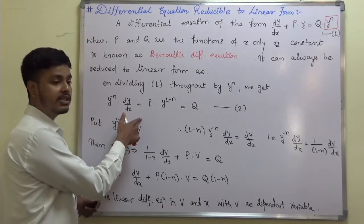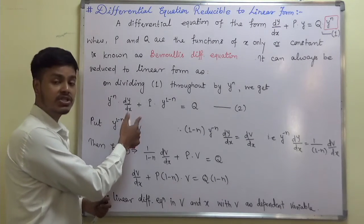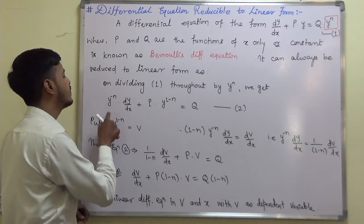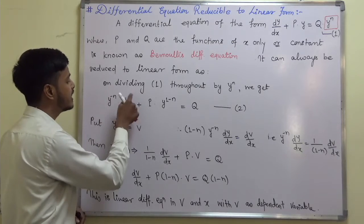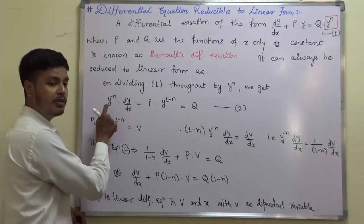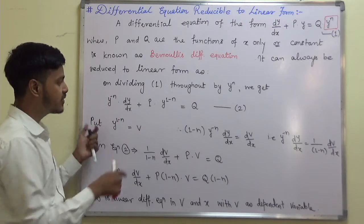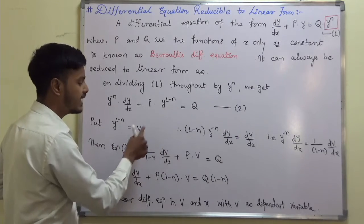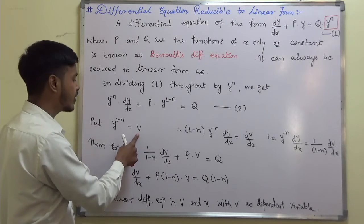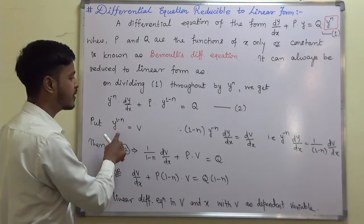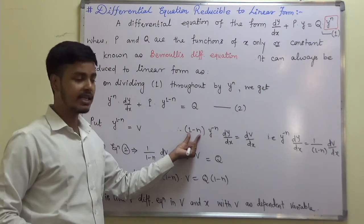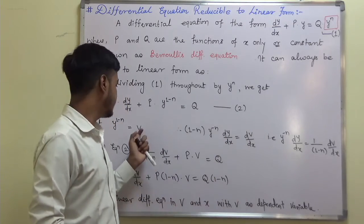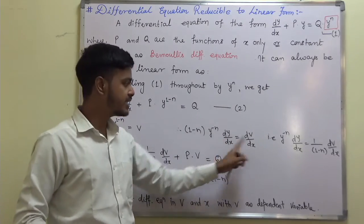To convert Bernoulli's equation into a linear differential equation, the coefficient of dy/dx must be 1. We take the substitution v = y^(1−n). Differentiating: (1−n)·y^(−n)·dy/dx = dv/dx, so y^(−n)·dy/dx = (1/(1−n))·dv/dx.